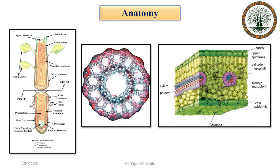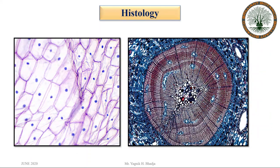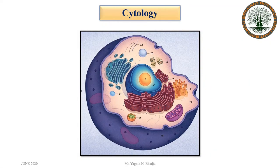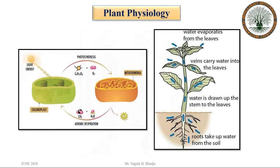In anatomy, internal structure is studied with the help of section cutting — longitudinal sections, transverse sections, vertical sections, etc. Another branch is histology, in which we study cells and tissues with the help of a microscope. Another branch is cytology, which involves the detailed study of cells, including the structures and functions of different organelles, studied with the help of an electron microscope.